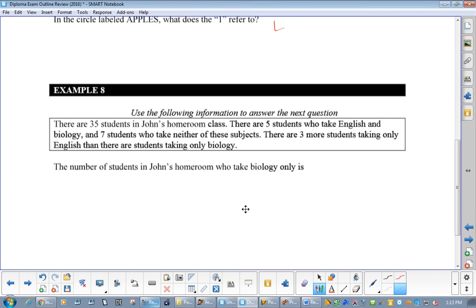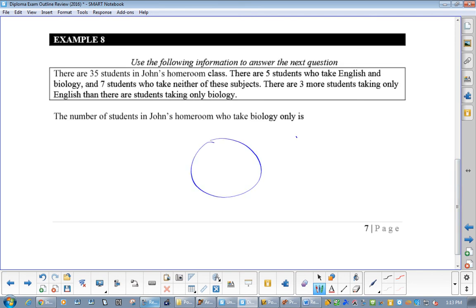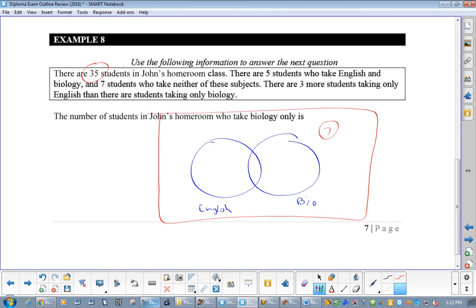There are 35 students in John's homeroom class. Five students who take English and Biology. Seven students who neither take these subjects. There are three more students taking only English than taking only Biology. So, we've got our two circles. Let's call this English. And that, Bio. Now, remember, we are starting with 35 students minus seven. So, there's seven out here. We've got 35 minus seven. That's our 28. So, 28 have to be dispersed in there.